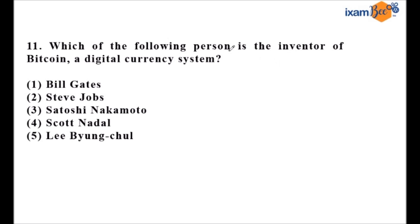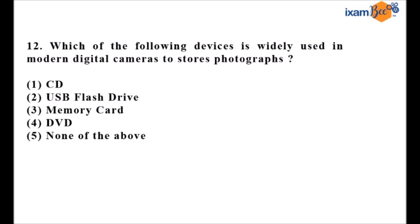Question eleven asks: who is the inventor of Bitcoin, a digital currency system? This is based on general knowledge. In NABARD, questions related to current affairs appear frequently across sections. The answer is option three — Satoshi Nakamoto.